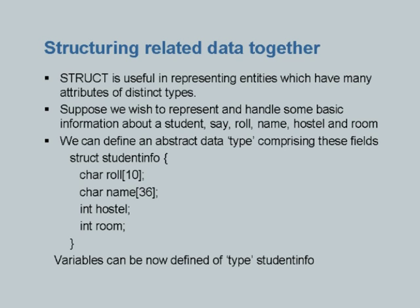char name[36] can house a name of up to 35 characters. int hostel — hostel is an integer. int room — room is an integer. So these are the four components: roll number, name, hostel, and room, which we are interested in recording and processing.